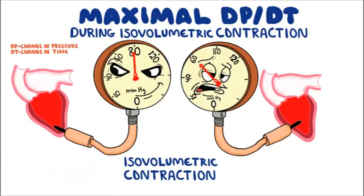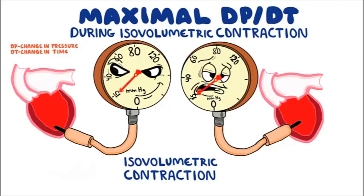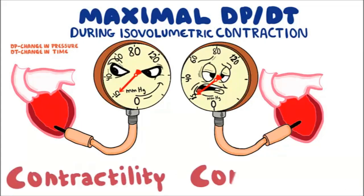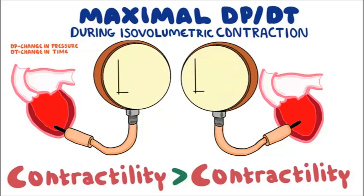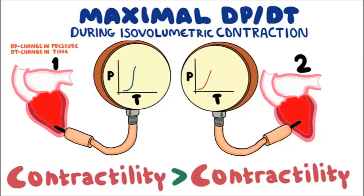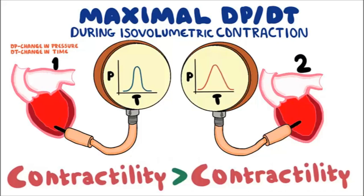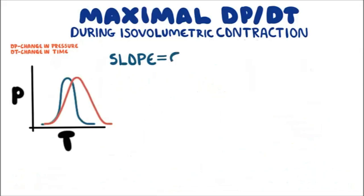The pressure is increasing faster in the heart on the left when compared to the right heart. We reach 80 mmHg in a shorter time in the left heart, whereas the right heart takes longer. This means contractility is greater in the heart on the left — it is contracting more forcefully, developing pressure faster. Graphically, with left ventricular pressure on the y-axis and time on the x-axis, the first ventricle shows a steep slope and the second a flatter one. This concludes that the slope is equal to contractility.